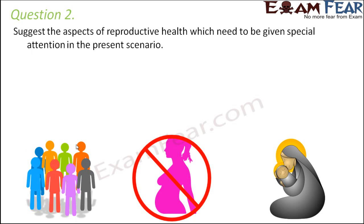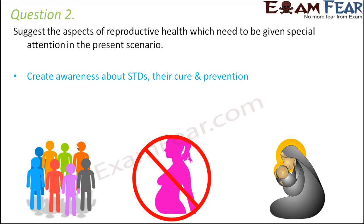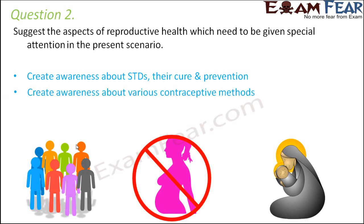Question number two: suggest the aspects of reproductive health which need to be given special attention in the present scenario. Looking at the present condition in our country, a lot of people die suffering from STDs, so awareness about STDs, their cure and prevention is a must. We also need to create awareness about various contraceptive methods, because even though abortion without medical cause is illegal, there are still many clinics where illegal abortions are being done, which is not good. That is why awareness about contraceptive methods is being promoted.